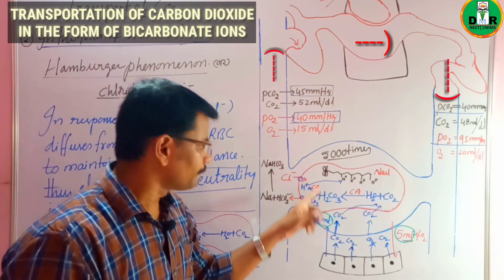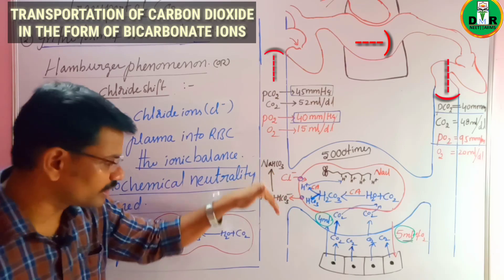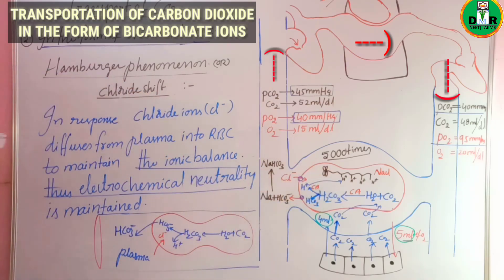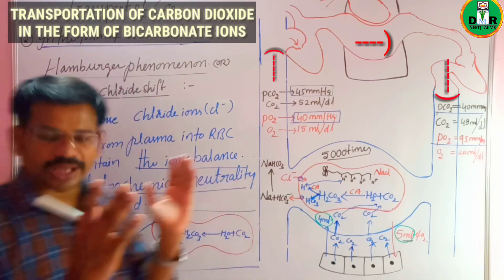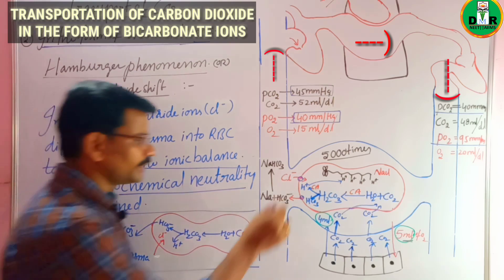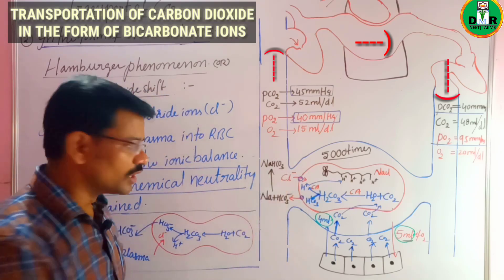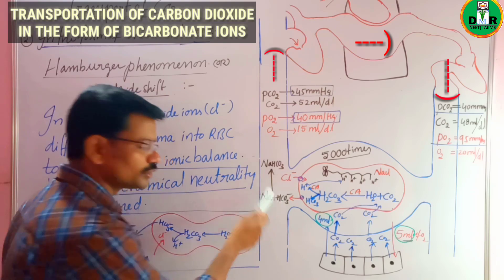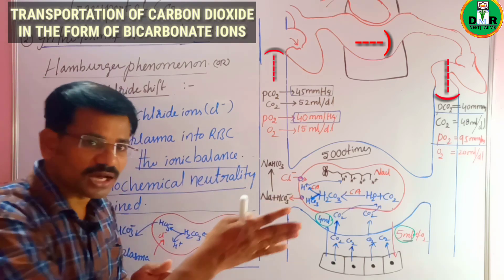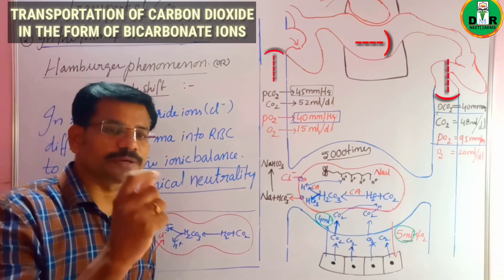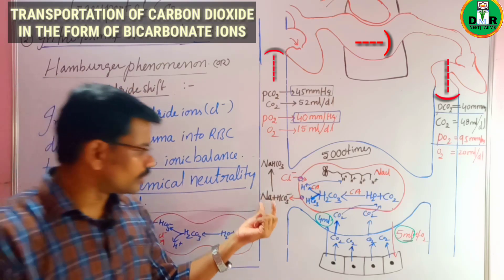The Hamburger phenomenon maintains ionic and electrochemical neutrality between the plasma and RBC. In response to HCO₃⁻ ions leaving the RBC into the plasma, chloride ions (Cl⁻) enter the RBC from the plasma. This exchange — HCO₃⁻ moving out and Cl⁻ moving in — occurs through a single protein in opposite directions, which is called an antiport process. This maintains electrochemical balance both inside and outside the RBC.